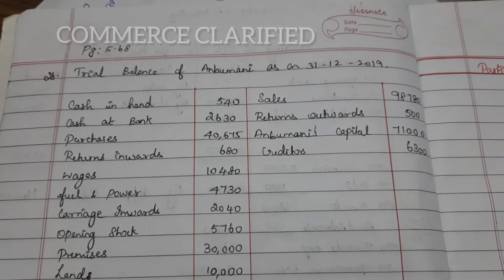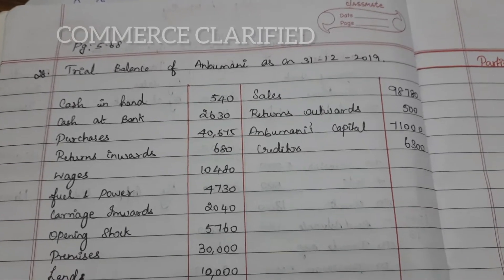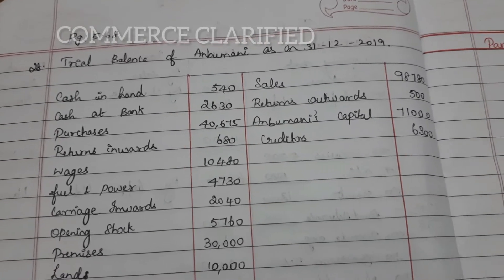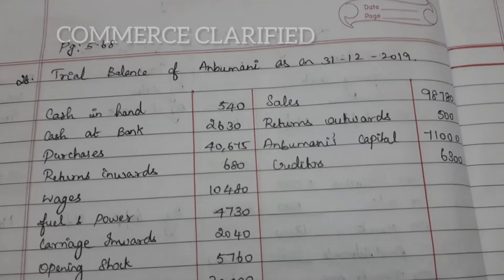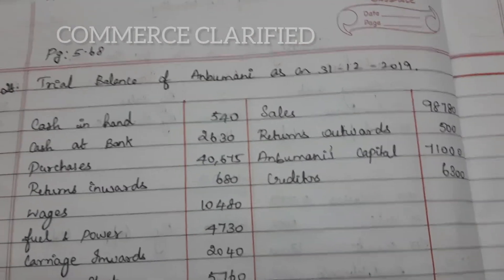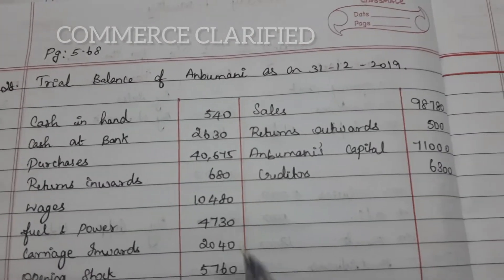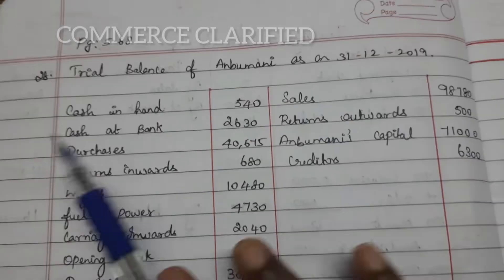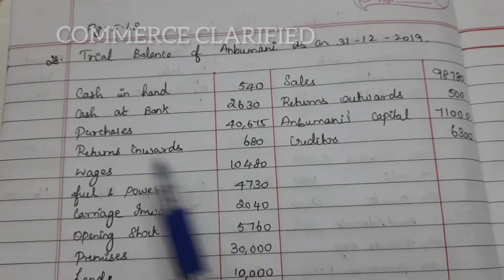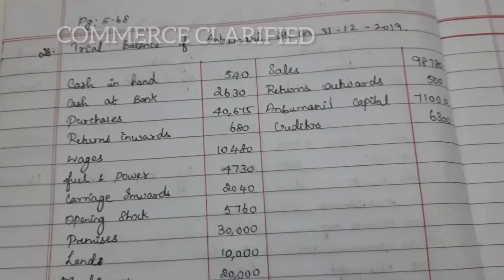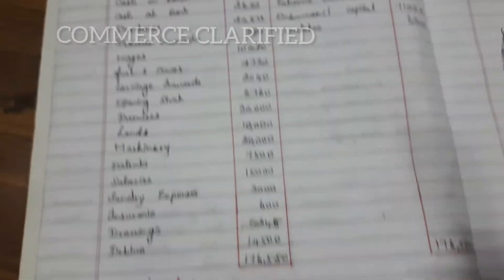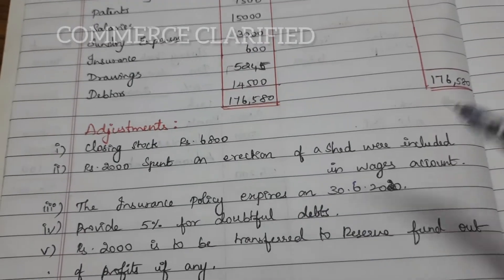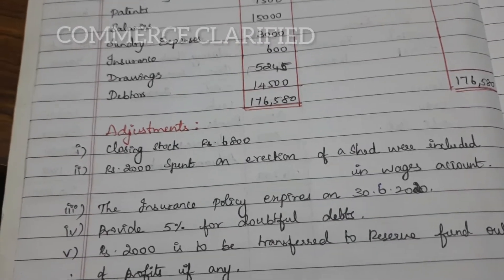Hi, Hello, Welcome to Commerce Clarified. In this video, we will talk about Final Accounts in exercise problem 28, page number 5.68. Trial balance of Unroo Money as on 31st December 2019. We will work through the trial balance, adjustments, P&L account, and balance sheet draft.